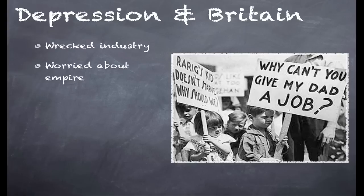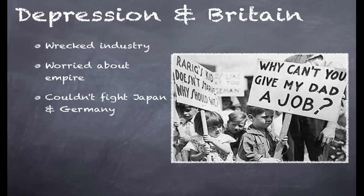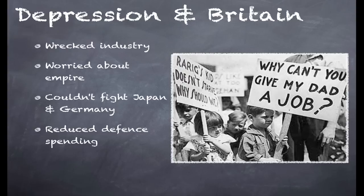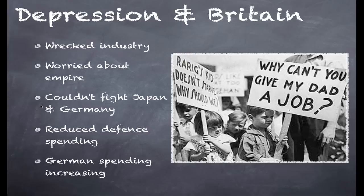How did the Depression affect Britain? It wrecked British industry and made the British more worried about their empire. The government had less money and therefore didn't want to do much apart from try to look after its empire and the people inside Britain. The government was very worried because it knew it didn't have the money or military resources to fight both Japan and Germany. This made it very cautious about getting into a conflict with either of them. Defence spending in the early 1930s was reduced, at the same time that German military spending was increasing dramatically.